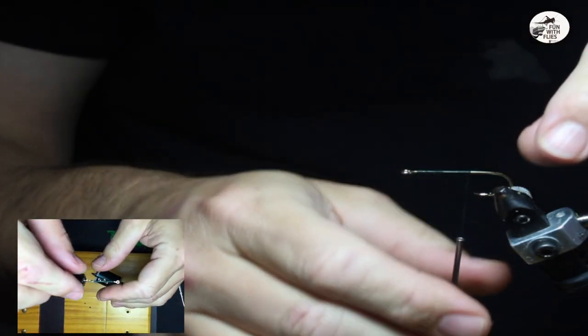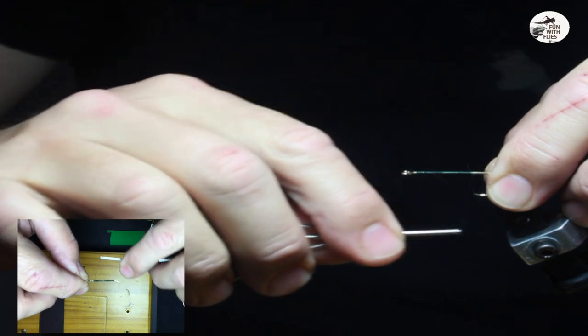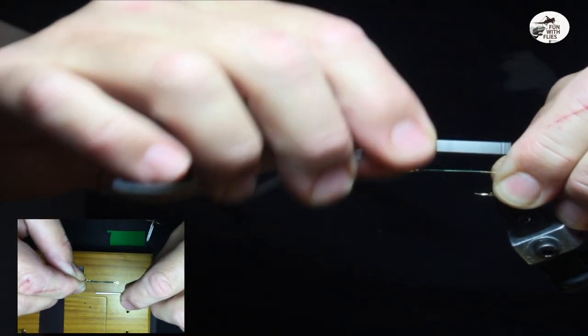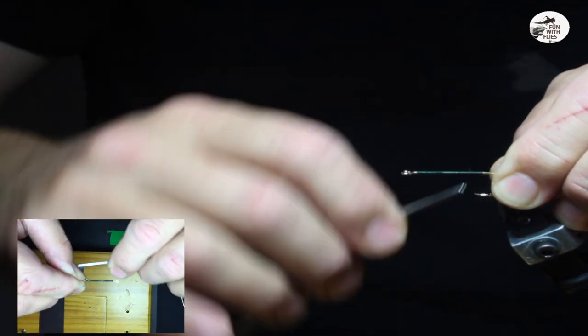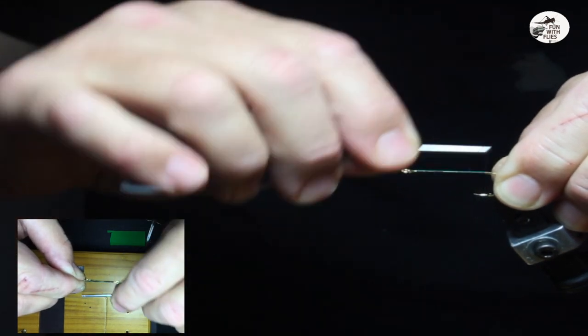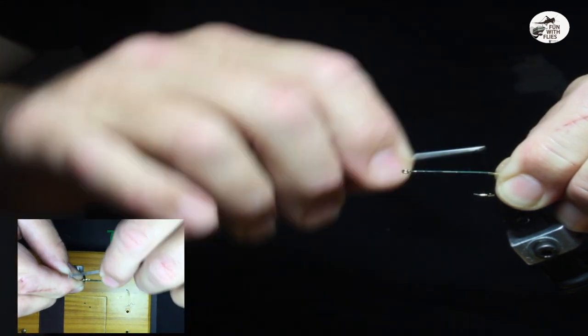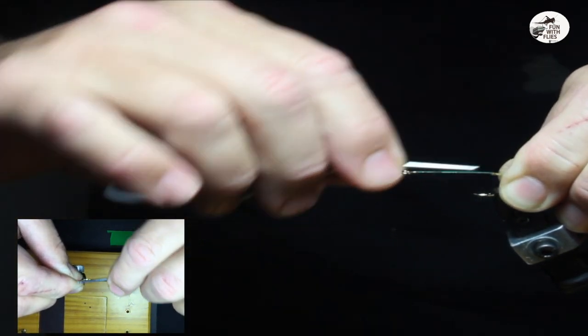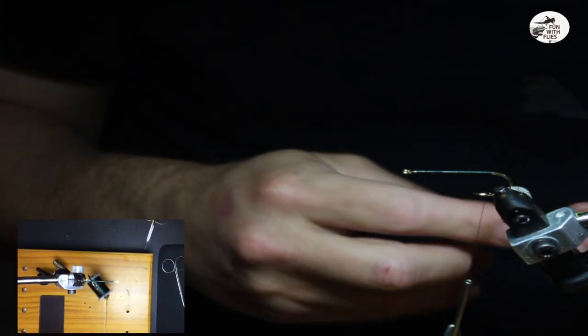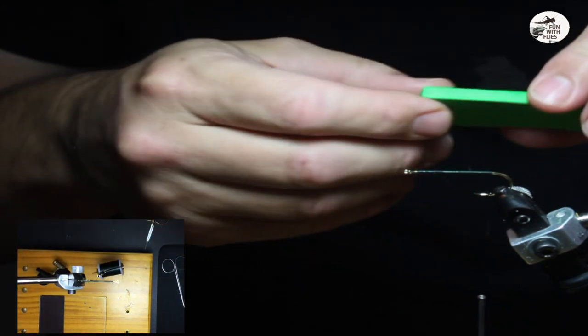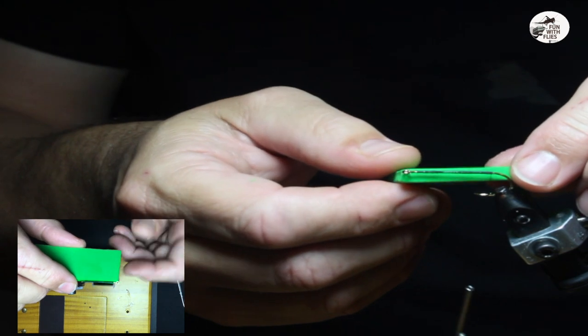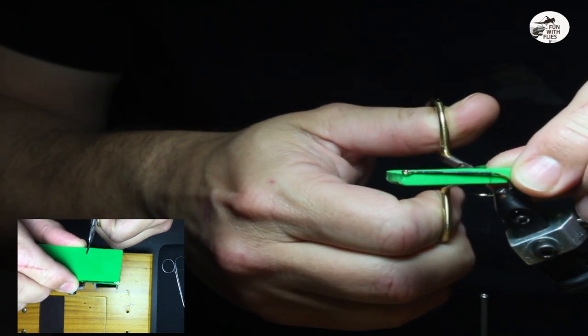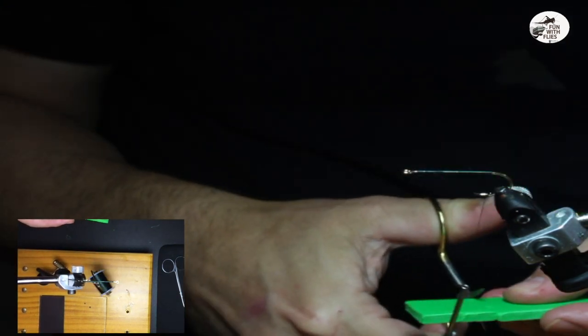Hi, this is George. Welcome to Funwood Flies. Today we're going to be doing a grasshopper. So let's get started. What we want to do is wrap this beyond the hook. We want to get the thread on here as close to the bend as we can. I'm doing a measurement, going right about here, a little past the eye, right about to the bend.